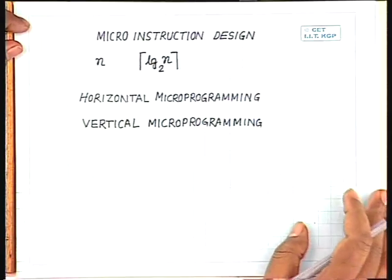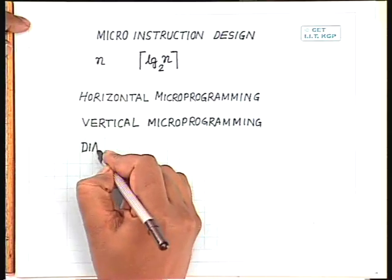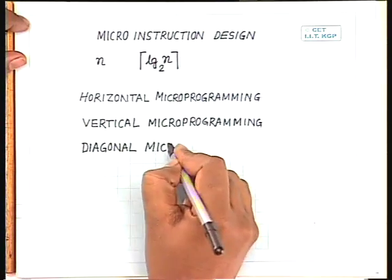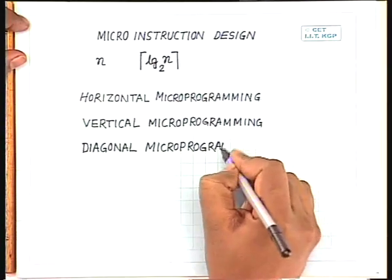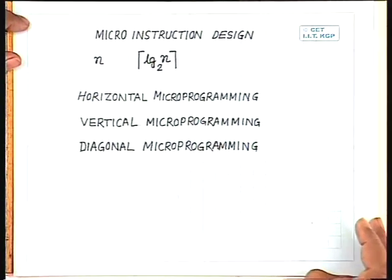None of these are suitable for our purpose, so what we need is something in between. We should try to reduce the number of bits in the control memory while simultaneously being able to generate the required number of control signals in parallel. In the case of diagonal microprogramming, what we have to do is group the control signals such that in a particular group, no two control signals will be activated simultaneously.